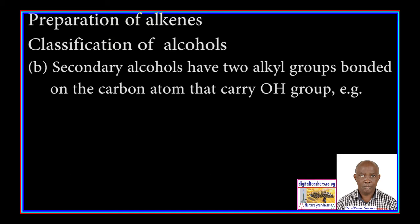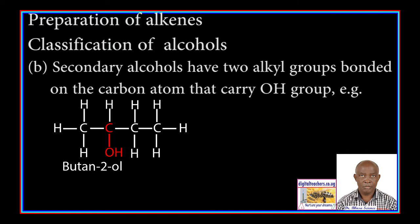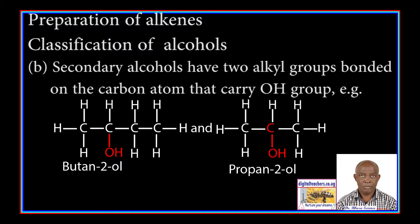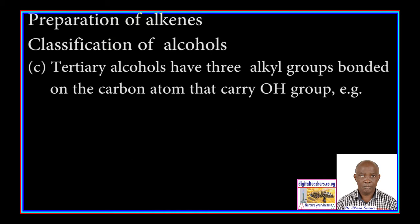Secondary alcohols have two alkyl groups bonded to the carbon atom that carries the OH group. For example, butan-2-ol.